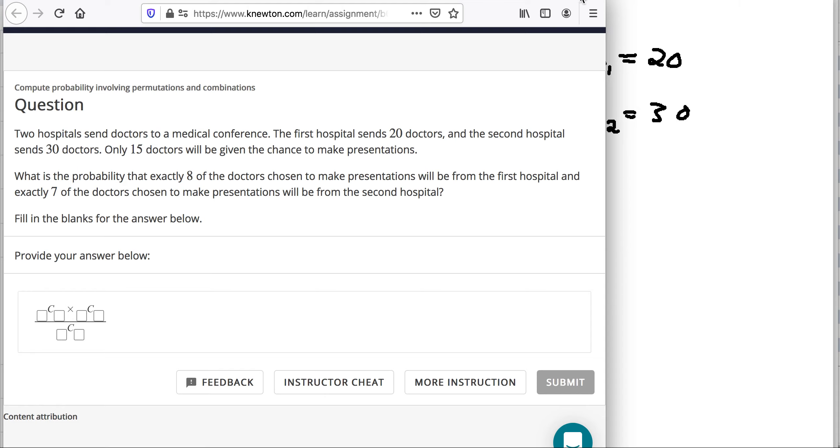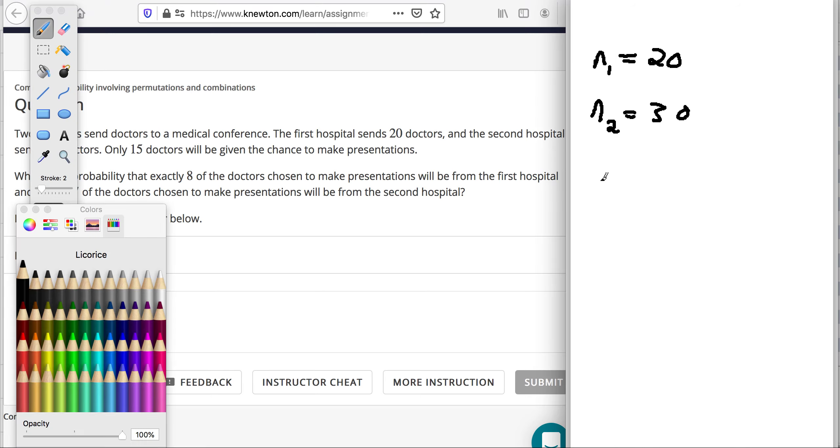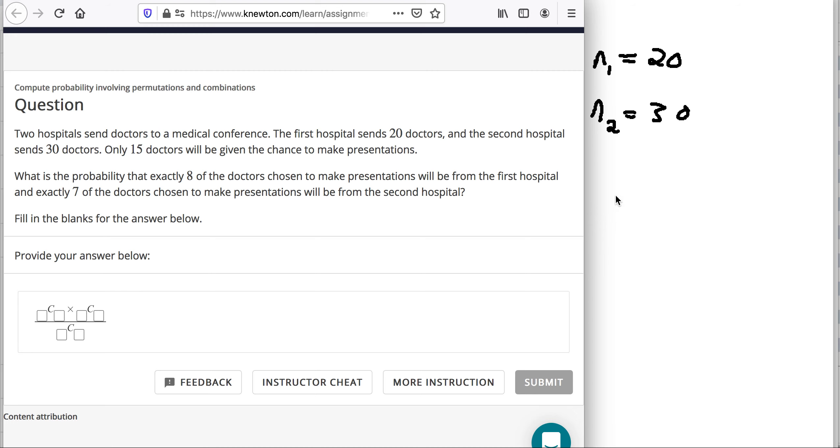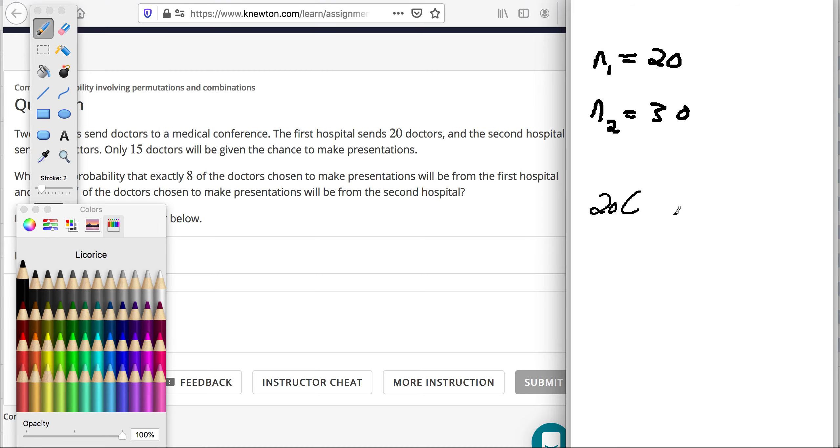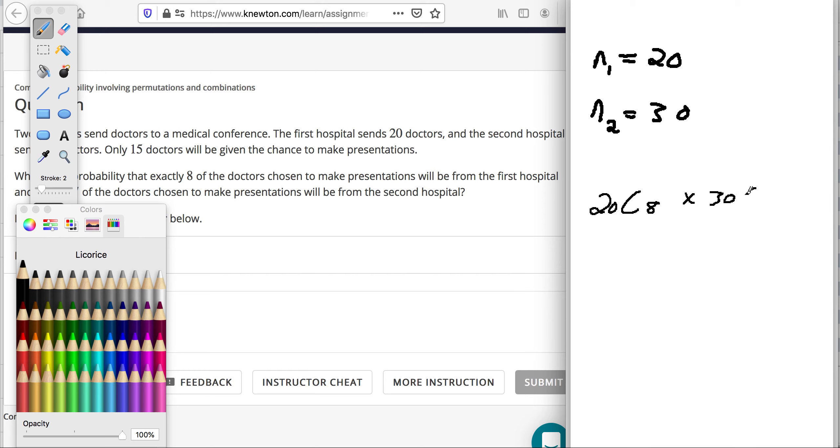So we've got to find out the number of ways we could pick eight doctors from the first hospital and then multiply to the number of different ways that we could pick seven doctors from the second hospital. And we multiply them because you could pair up Joe with Jessica, or Joe from the first hospital, Jessica from the second hospital, or Joe from the first hospital and Betsy from the second hospital. There's a whole bunch of different ways that you can make those combinations. So the first thing we need to do is 20 choose eight doctors from the first hospital. There's 20 doctors in the first hospital. We're choosing eight of them. So I'm going to multiply that by, the second hospital has 30, and we want seven from the second hospital. So from the 30 in the second hospital, we're going to choose seven.